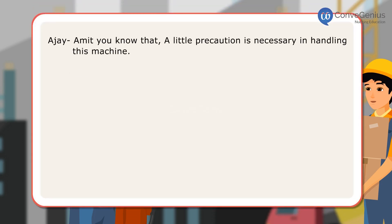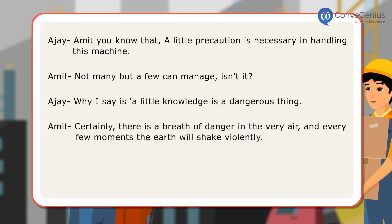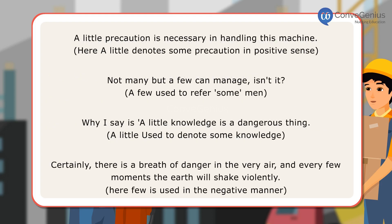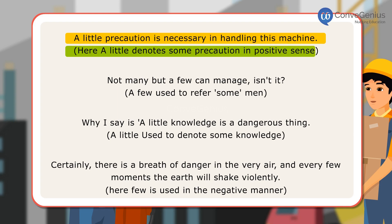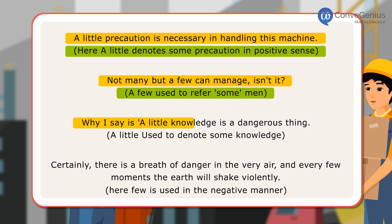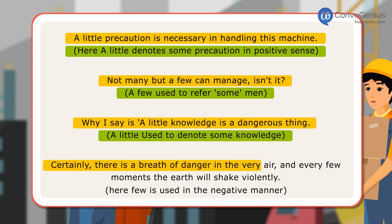In the above conversation, we come across quantifiers to describe the quantity of countable or uncountable nouns. Here are some example sentences. 'A little precaution is necessary in handling this machine' — here, a little denotes some precaution in a positive sense. 'Not many, but a few can manage' — a few is used to refer to some men. 'A little knowledge is a dangerous thing' — a little is used to denote some knowledge. 'There is a breath of danger in the very air and every few moments the earth will shake violently' — here, few is used in the negative manner.